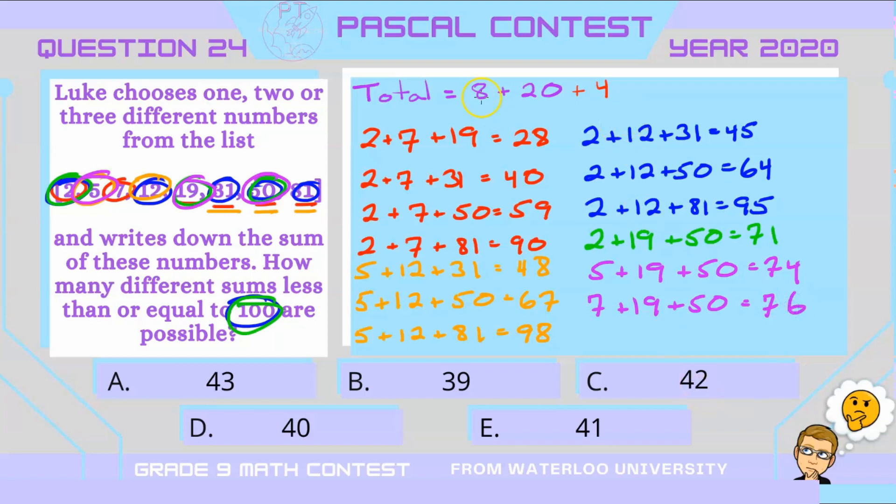So we have our original eight when we only chose one. We had 20 when we chose two. And then we had these four and another nine, which gives us a total number of 41 different possible sums. So our answer is E.